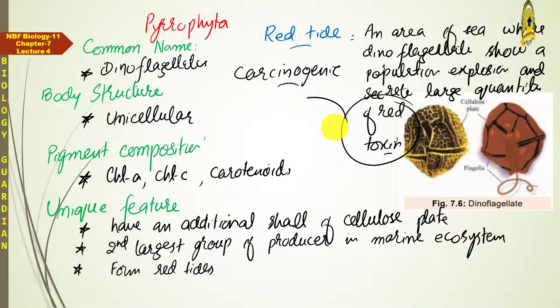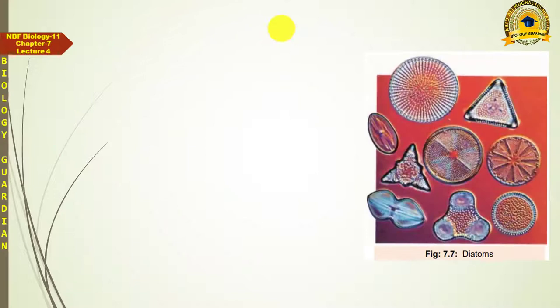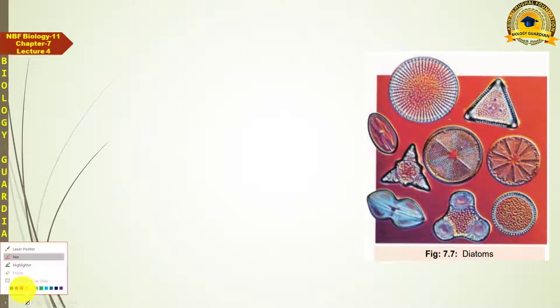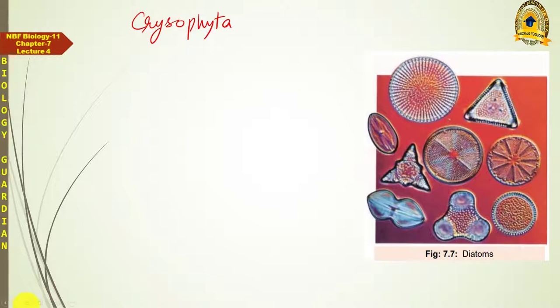After Pyrrophyta, the next group of algae is Chrysophyta, which are commonly called Diatoms. Their common name is Diatoms.